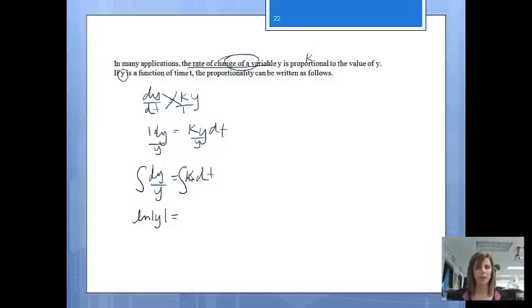On the right side, since k is a constant, this would just be kt, because my variable is t, plus c. And then just how we have learned before, following my logarithm loop, I'll get e to the kt plus c equals y.